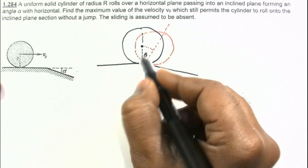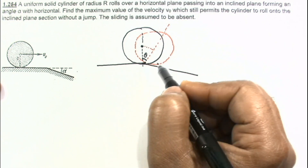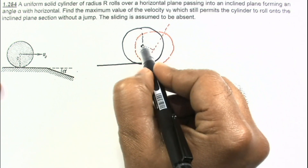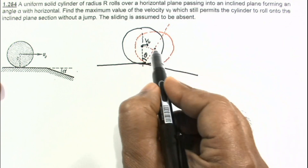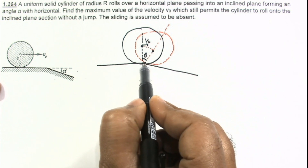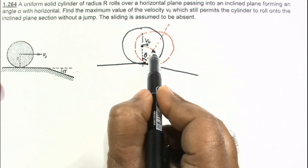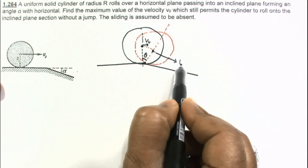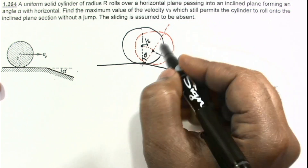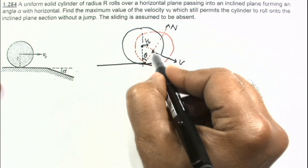We are assuming, as given, that there is no slipping, so at this contact no slipping is maintained. Here the velocity of the center was V0. It was moving with V0, and when the center has reached the new position, this contact point can be treated as the instantaneous axis of rotation. So the center is moving with velocity V in pure rotation about this instantaneous point. The forces acting are the normal reaction and mg.